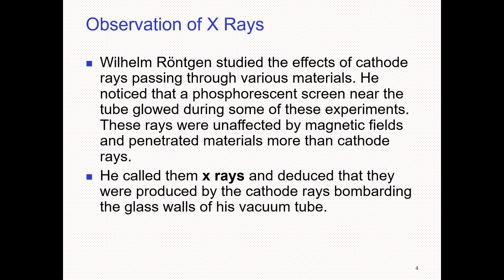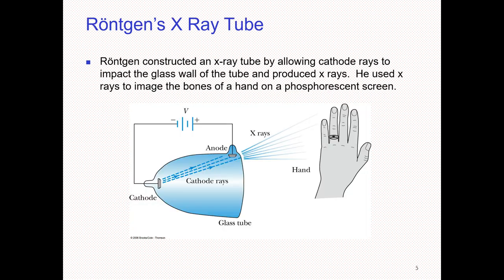These unknown rays had greater penetrating power than cathode rays, and were named X-rays. They were produced by cathode rays bombarding the glass wall of a vacuum tube. Röntgen used a vacuum tube to produce these unknown rays, recording images on a photographic plate.